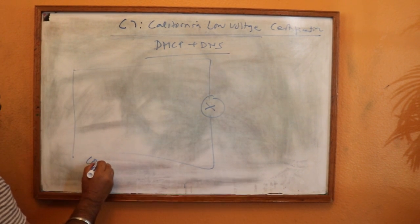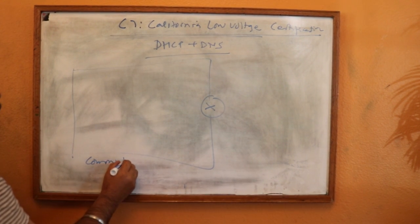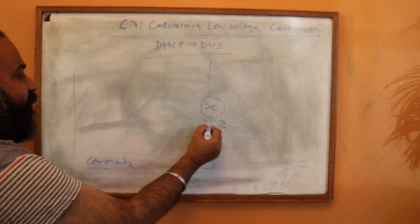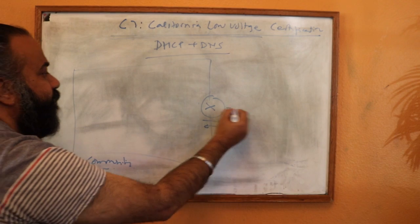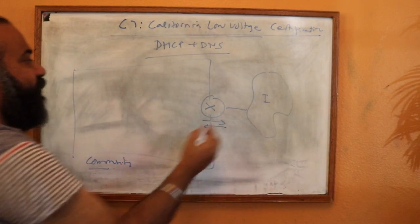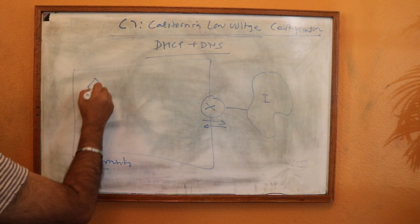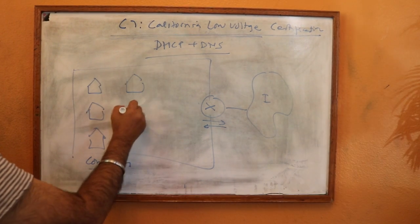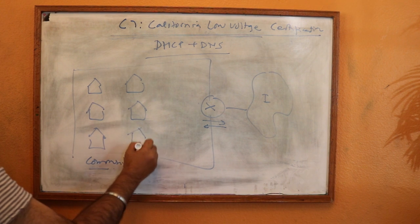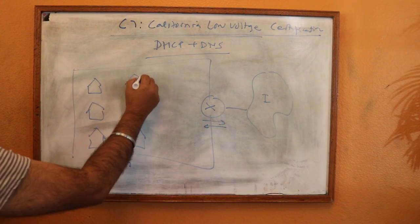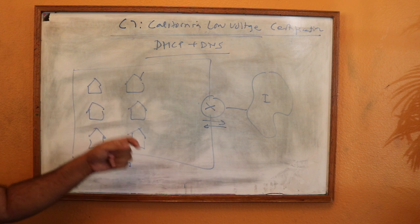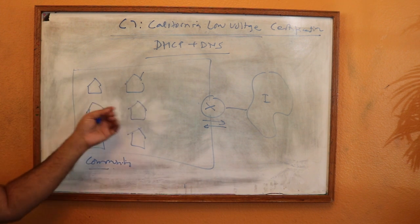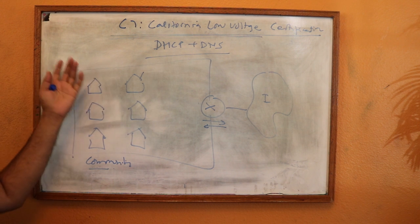Think of this as a community. In order to go out from the community, there is only one gateway — one exit and entry route — to the internet. The homes in this analogy are computers or devices which need IP addresses: your iPhone, Mac Pro, iPad, Android device, laptop, printer — anything that requires an address.